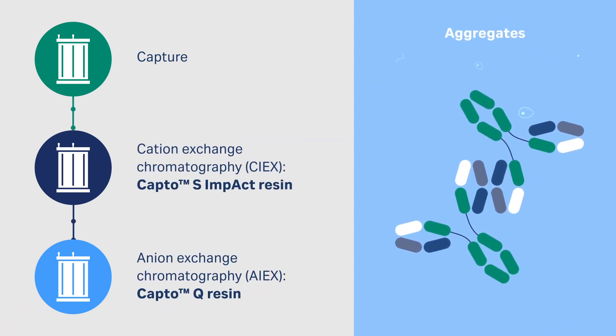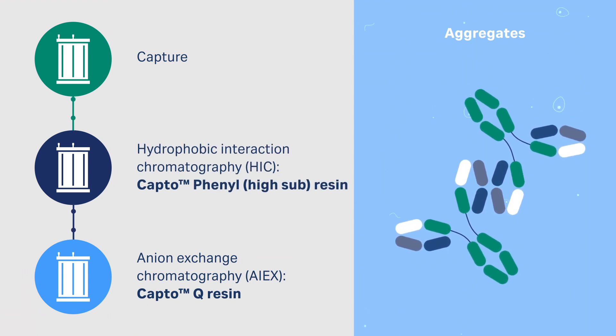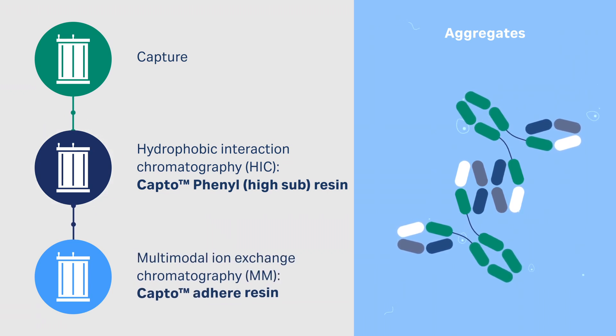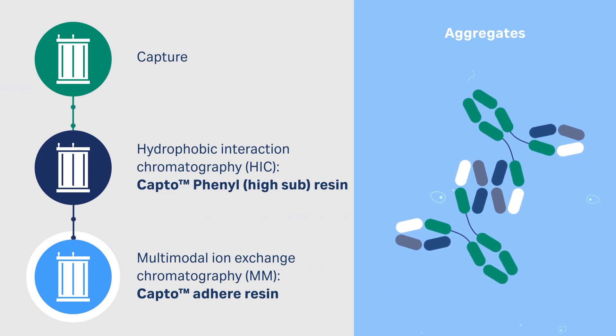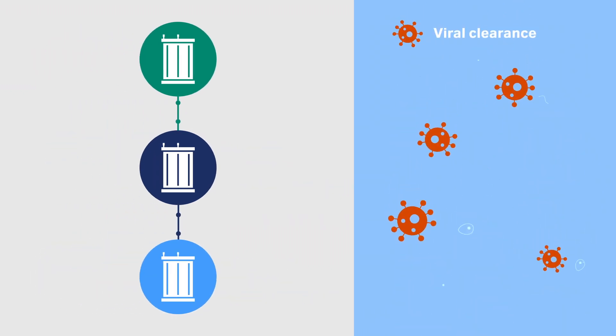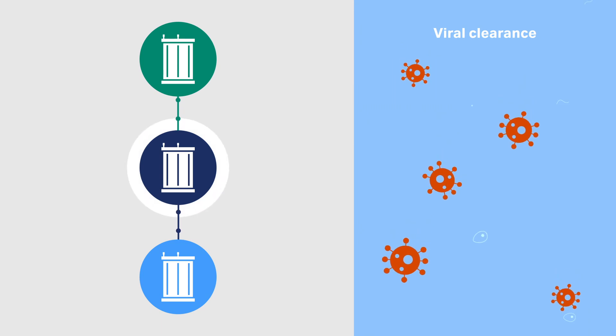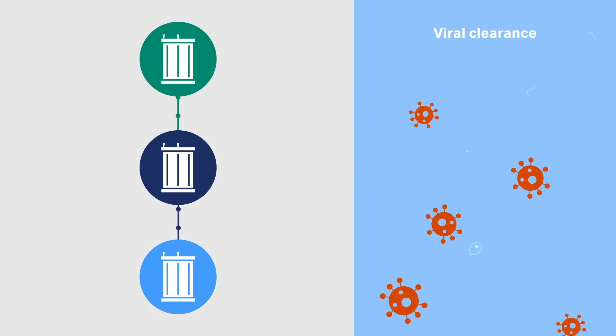Are aggregates difficult to remove? Use ion exchange chromatography or hydrophobic interaction chromatography in flow-through in the first polishing step, and then use multimodal chromatography in flow-through in the second polishing step. Remember to include anion exchange or multimodal anion exchange in one of the polishing steps for virus removal.